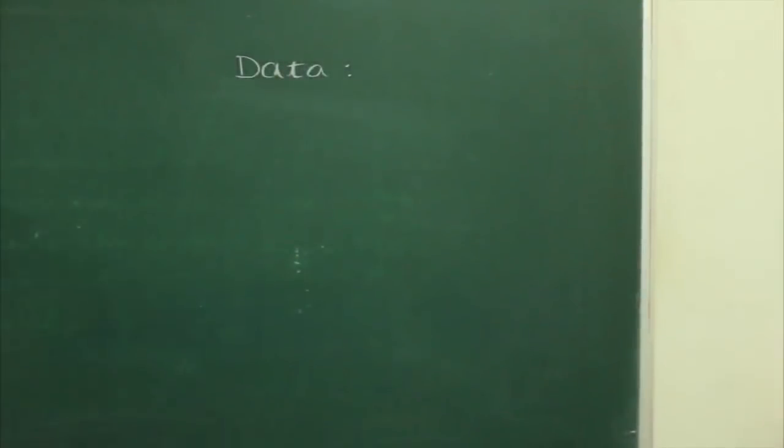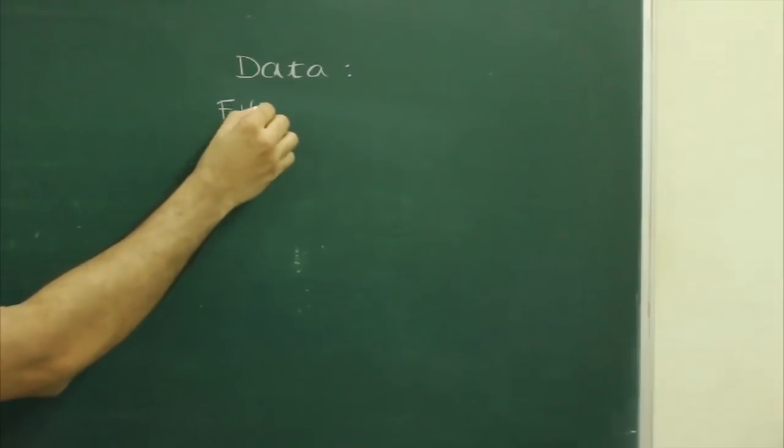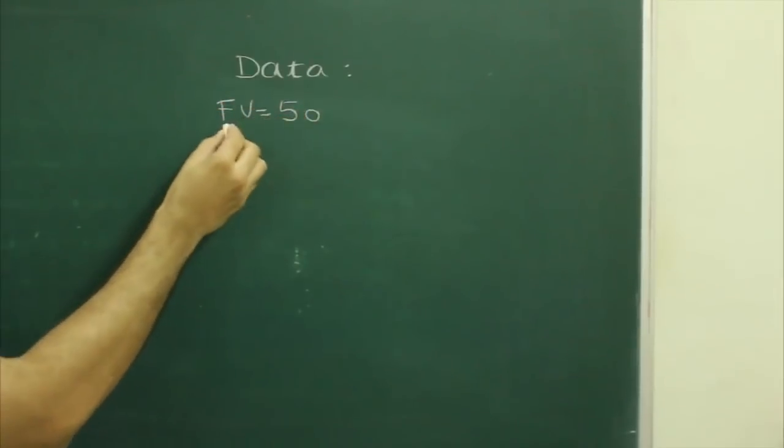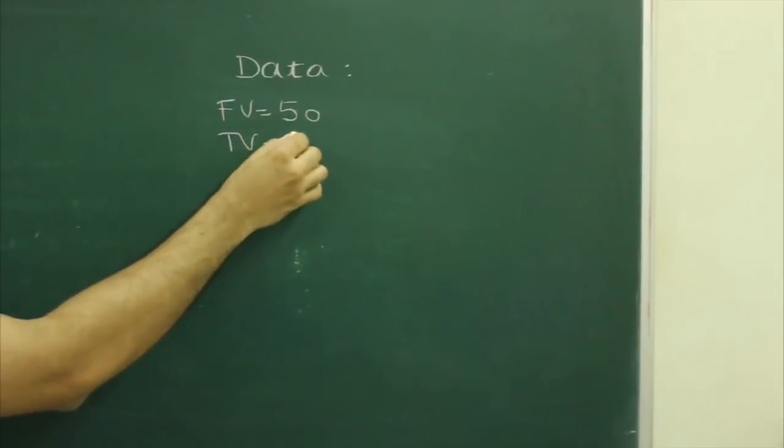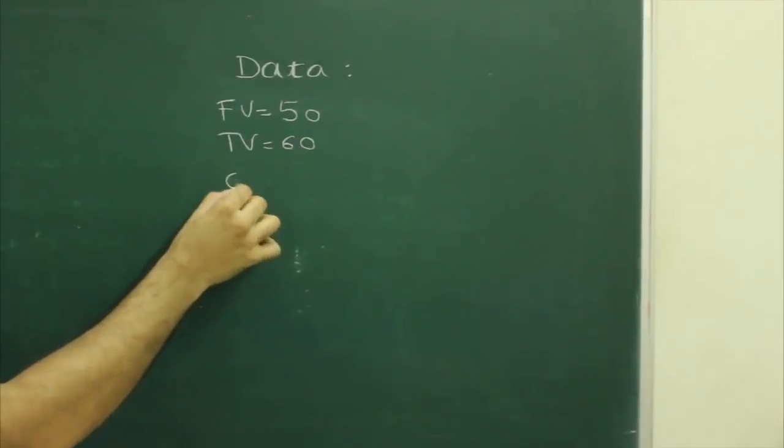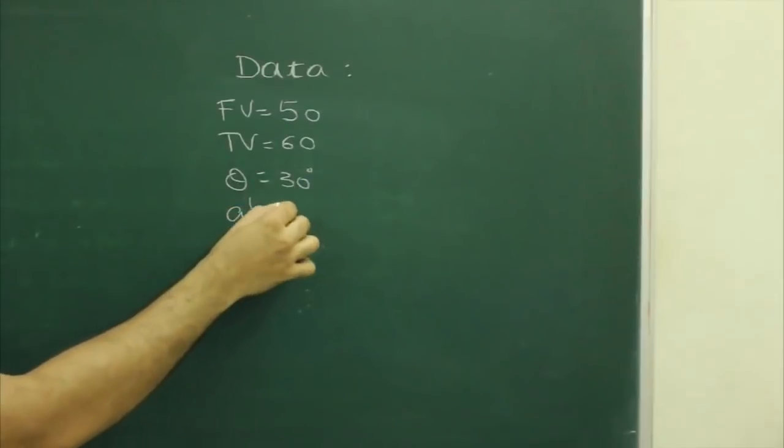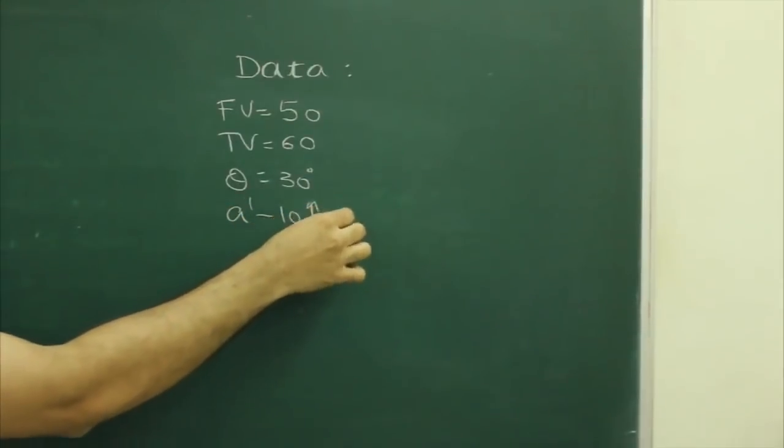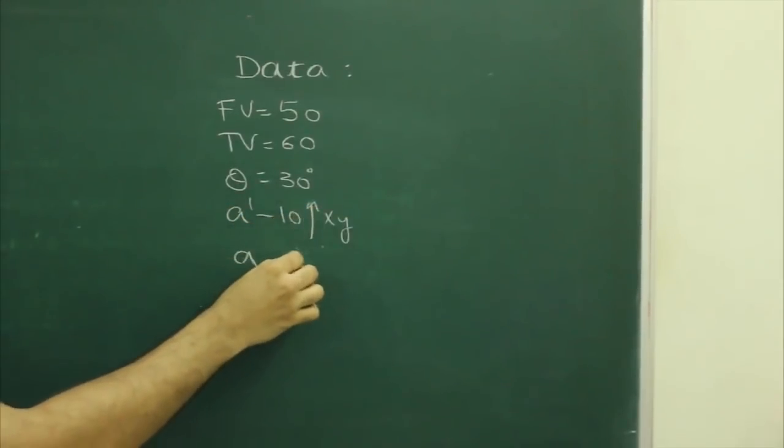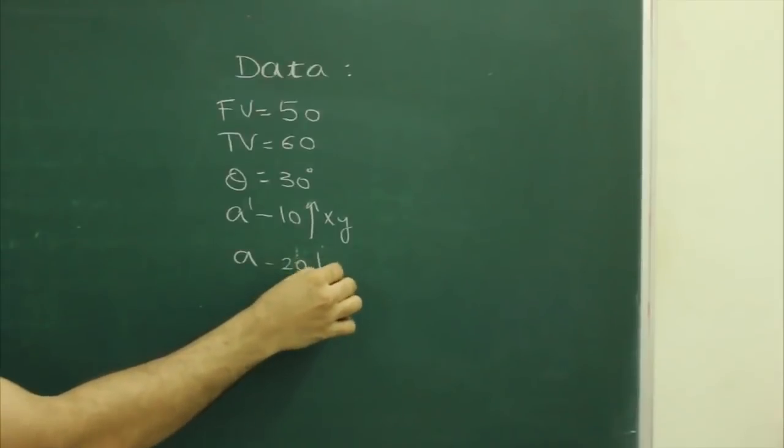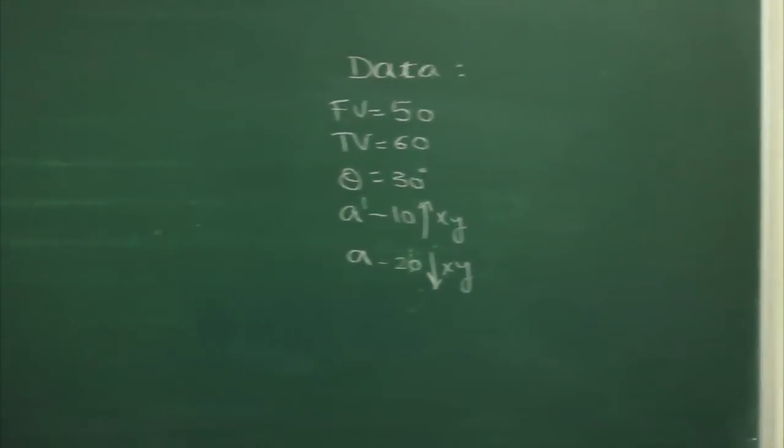Now we will write data. Front view 50mm, top view 60mm, theta 30 degrees. A is 10mm above XY, A is 20mm below XY.